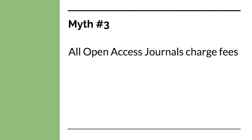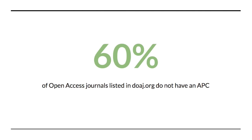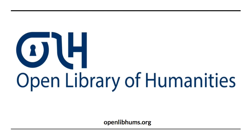The third myth is that all open access journals charge fees — this isn't true either. According to the Directory of Open Access Journals, over 60% of open access journals listed in their directory do not have an APC. There are even new open access models developing. Launched in 2015, the Open Library of Humanities is a new humanities publishing platform that does not charge subscription or any author-facing fees. The platform is instead funded by institution and library memberships. If you're a humanities researcher, I highly suggest you check out the Open Library of Humanities at openlibhums.org.